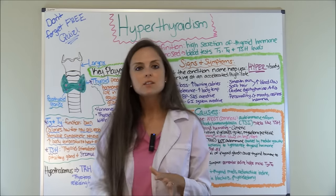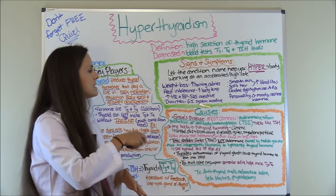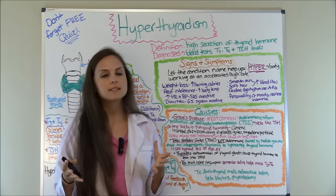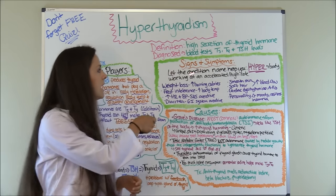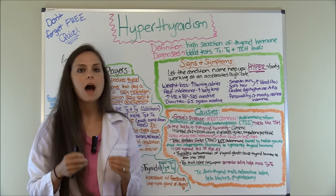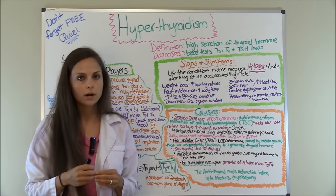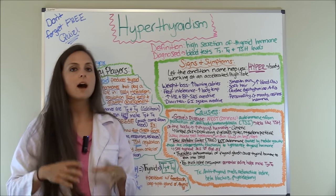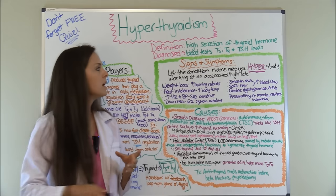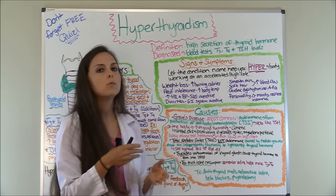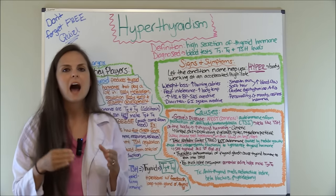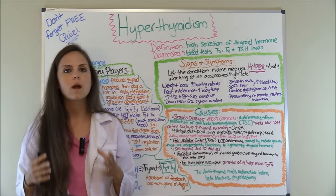Now let's look at our signs and symptoms. Whenever you're looking at signs and symptoms, let the condition name help you. We're talking about hyperthyroidism — hyper means high, elevated. So everything in the body is going to be working at an accelerated, high rate.